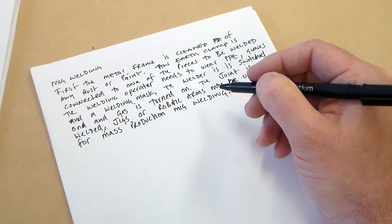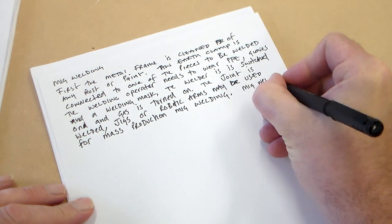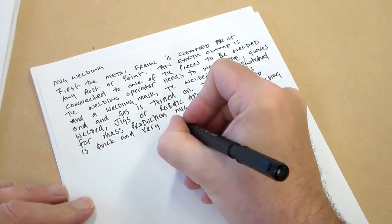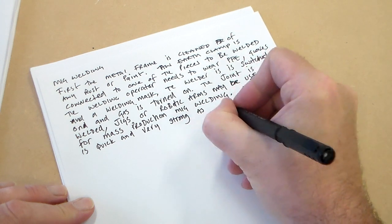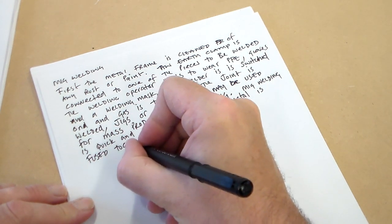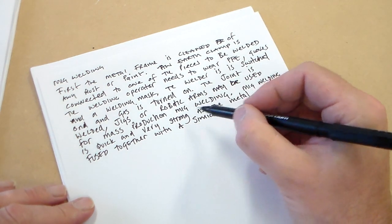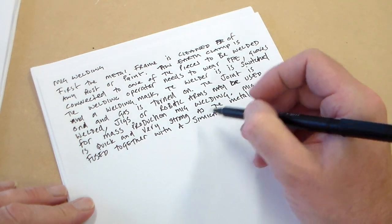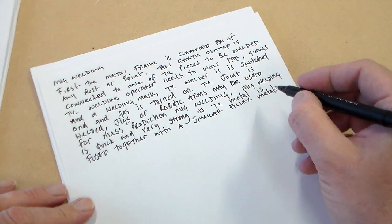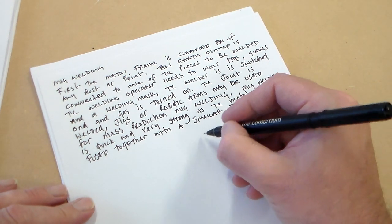We need to say why it is suitable. MIG welding is quick and very strong as the metal is fused together with a similar filler metal. Basically what we're saying is the filler metal is the same as the material, so you're getting a joint that is contiguous, all the same material. To draw it, we need to draw an illustration.